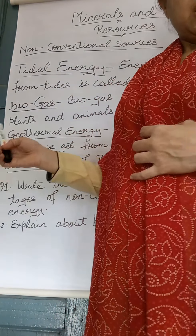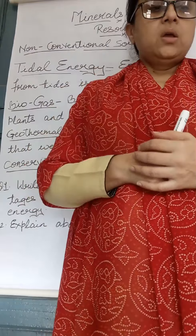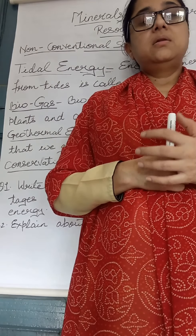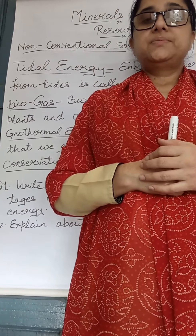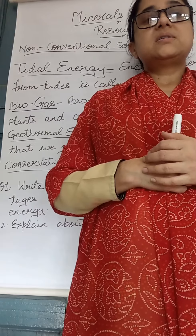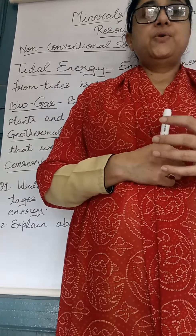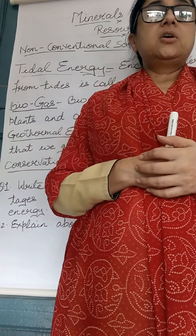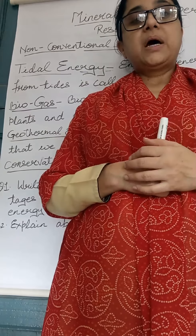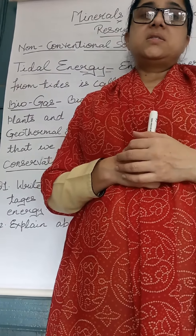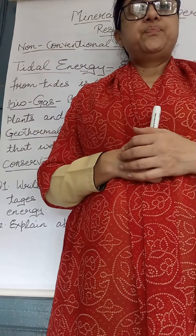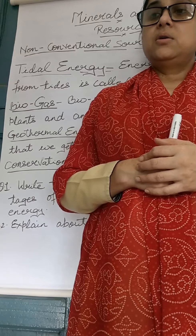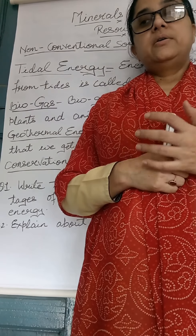Now, biogas. Where is biogas obtained? It is obtained from plants and animal dung. In this process, the dead plants and animal dung are converted into gaseous fuel — it is called biogas. The organic waste is decomposed by micro-bacteria which takes place in a biogas digester to emit biogas. This biogas is generally used in rural areas of developing countries.